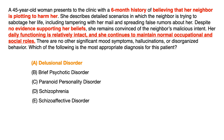The next sentence is the most crucial part to differentiate and get this question correct: daily functioning is intact, and the patient continues to maintain normal occupational and social roles. This is the key to delusional disorder. The criteria is the presence of one or more delusions that last for one month or longer, and patients generally maintain normal occupational and social roles.